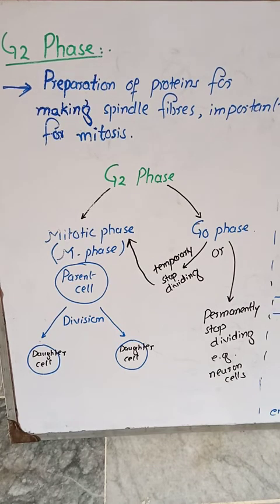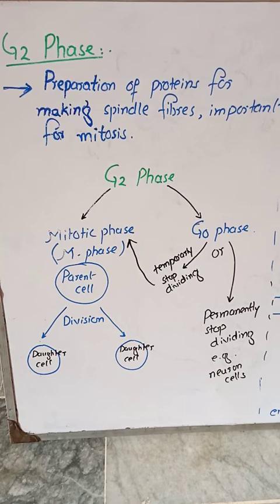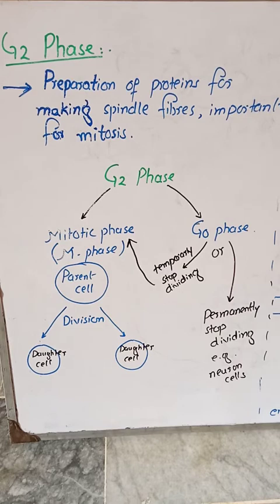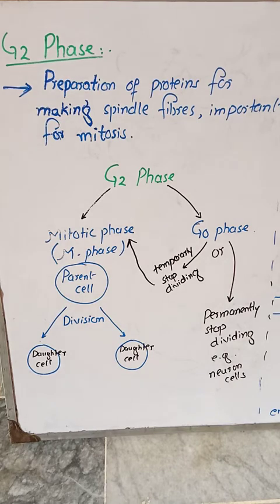Now coming to the G2 phase. During this phase, the cell prepares its own proteins for making spindle fibers. These spindle fibers are important for mitosis, which is a type of cell division. During G2 phase, the cell has two options: whether it goes to G0 phase or whether it will go to the mitotic phase.